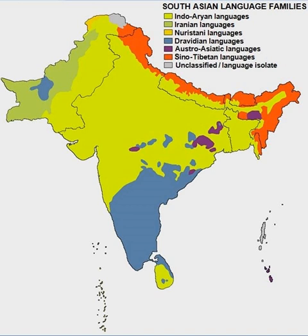The Austroasiatic family is thought to be the first to be spoken in ancient India. Austroasiatic languages include the Santali and Munda languages of eastern India, Nepal, and Bangladesh, and the Mon-Khmer languages spoken by the Khasi and Nicobarese in India and in Burma, Thailand, Laos, Cambodia, Vietnam, and southern China. The Austroasiatic languages are thought to have been spoken throughout the Indian subcontinent by hunter-gatherers who were later assimilated first by the agriculturalist Dravidian settlers and later by the Indo-Aryan peoples arriving from northwestern India.